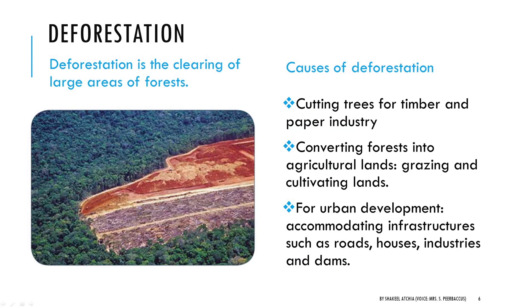Deforestation is defined as the clearing of large areas of forest. Why do people do deforestation? They cut down trees for industrial materials such as paper and timber. They convert forests into agricultural lands, for example grazing for farm animals and for cultivating crops. They clear forests for urban development, accommodating roads, buildings, industries, residential plots, and dams.